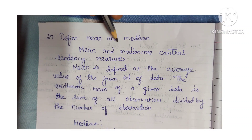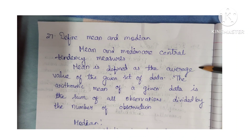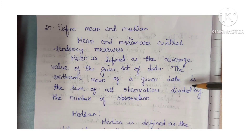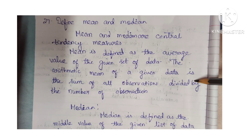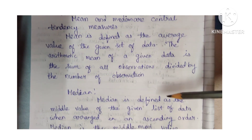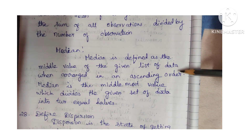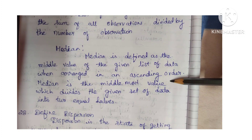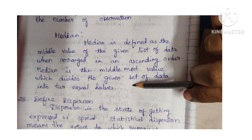Define mean and median. Mean and median are central tendency measures. Mean is defined as the average value of the given set of data — the arithmetic mean is the sum of all observations divided by the number of observations. Median is defined as the middle value of the given list of data when arranged in ascending order. Median is the middlemost value which divides the given set of data into two equal halves.